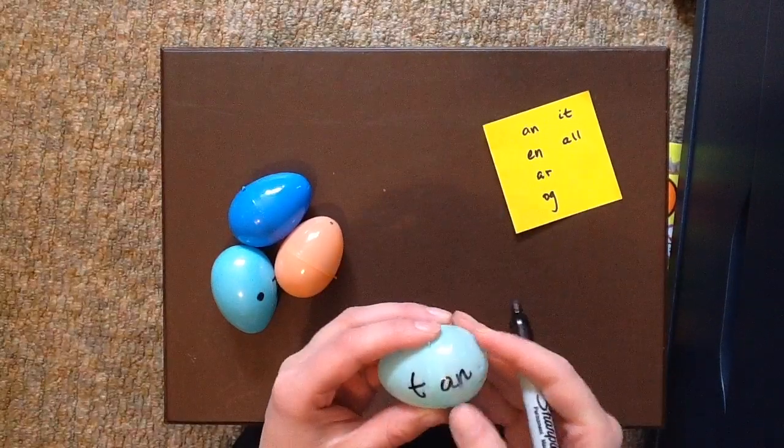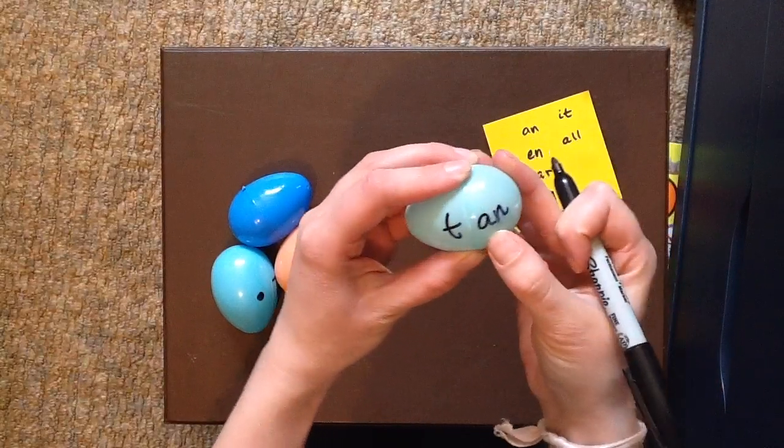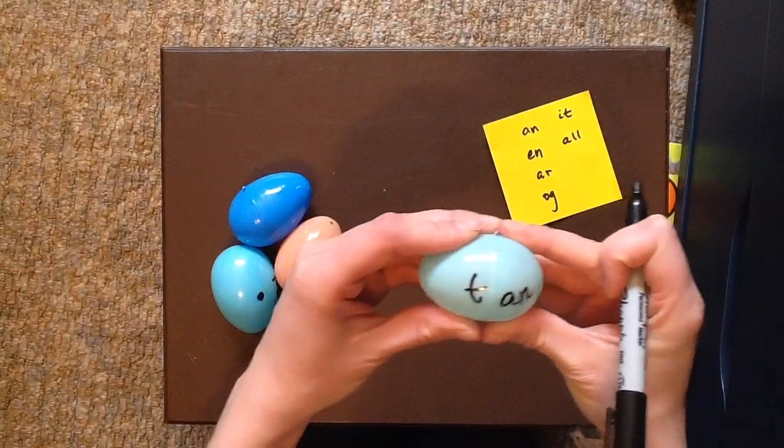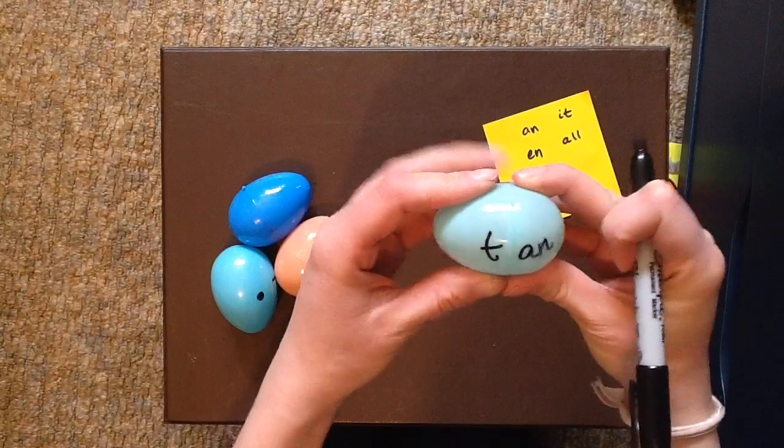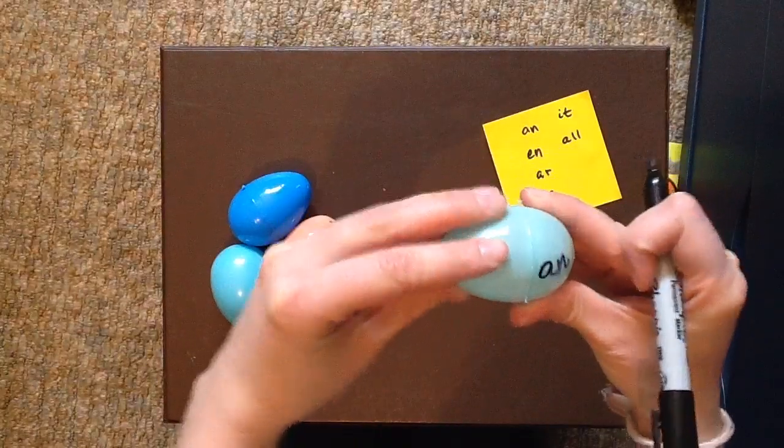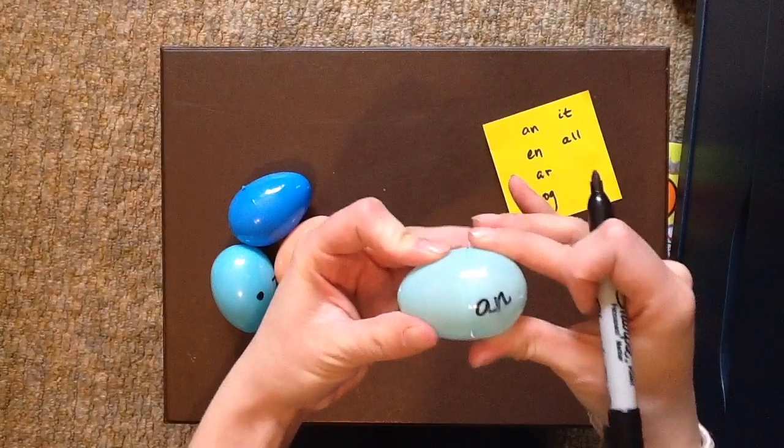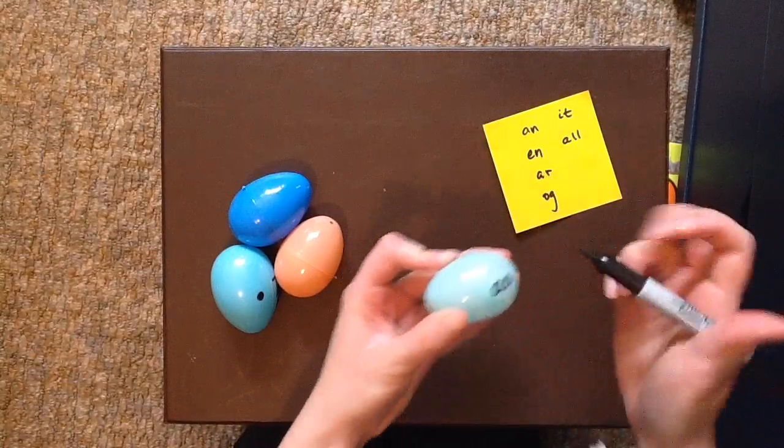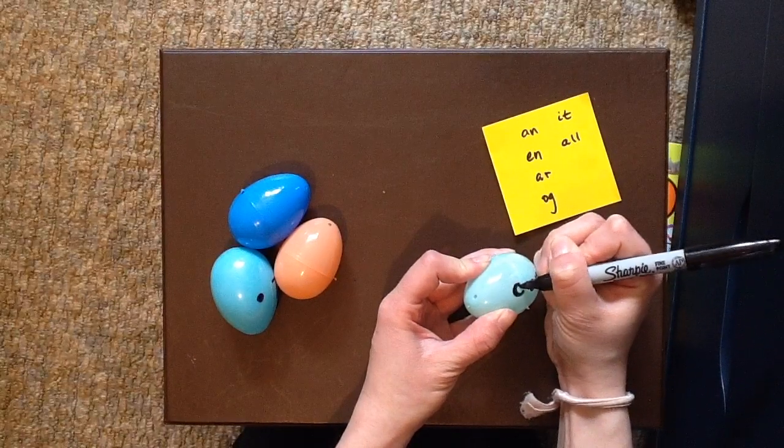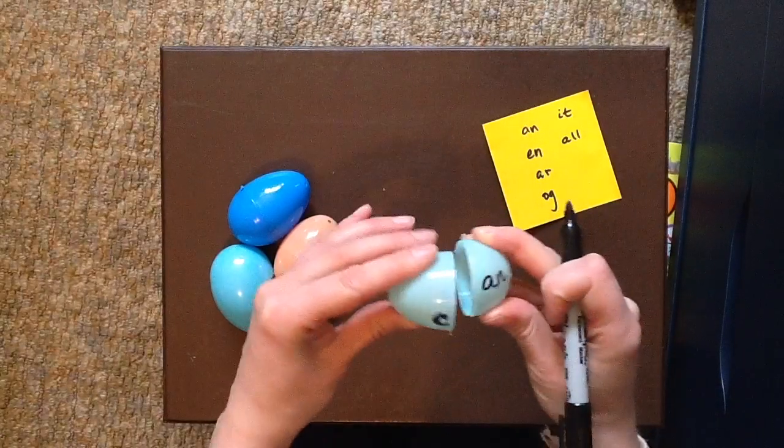T-A-N spells tan. You have to be kind of careful because I just smeared it a bit—it's very plastic, it depends on the egg, sometimes the ink doesn't stick so good. Then I spin it and think of another word I can make that ends in A-N, and I know that C-A-N is can, so I'm going to put a C here. And then I'm going to spin it and try and think of another one.